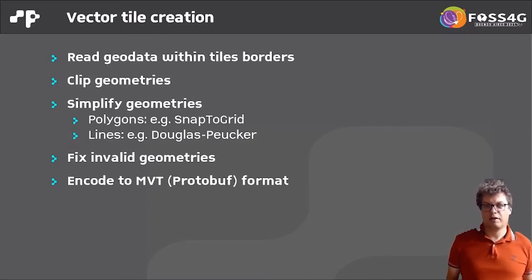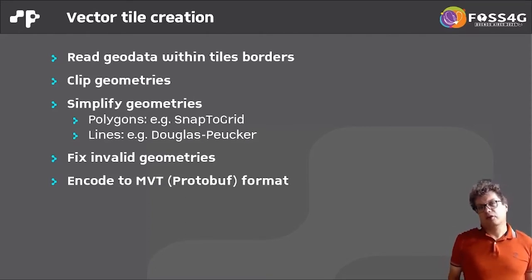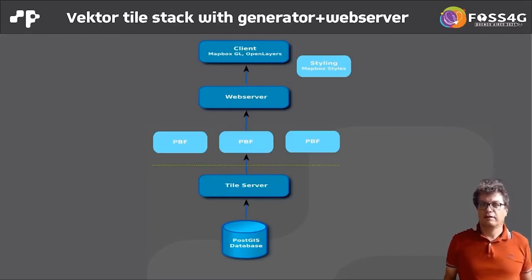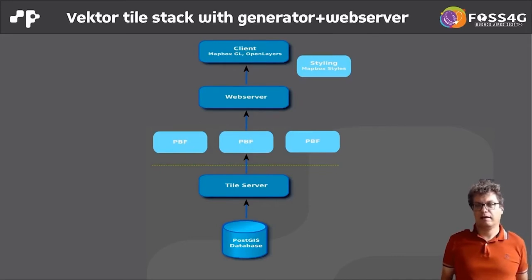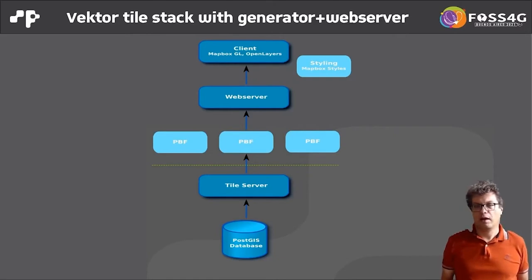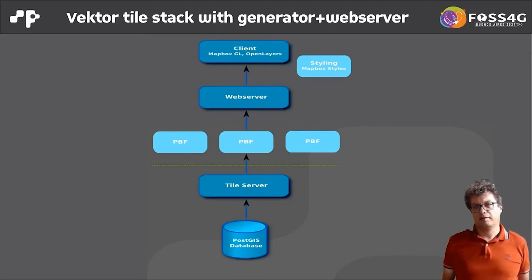After simplification you have to fix invalid geometries, and finally the vectors are encoded in the MVT format, which is a protobuf format. A typical tile stack in the generate mode means you generate vector tiles as files — maybe on a local file system, AWS S3, or similar services — and these generated files can then be served with a regular web server to the client, which applies the styling.